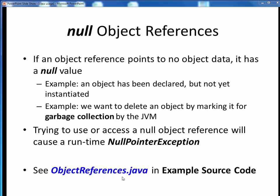As you can see in the cited example code, if an object reference exists but doesn't point to any object data in memory, it has a null value. The two situations in which you'll see this are if an object has been declared only but not yet instantiated, or if we want to explicitly delete an object by marking it for garbage collection by the JVM. If you try to do anything with a null object reference — for example, access or manipulate its non-existent data — Java execution will respond with a runtime null pointer exception error. We haven't really discussed yet what an exception is, but for now it just means that something bad or unexpected has taken place during program execution. To see an example of null object references, you can take another look at the code walkthrough video for objectreferences.java.